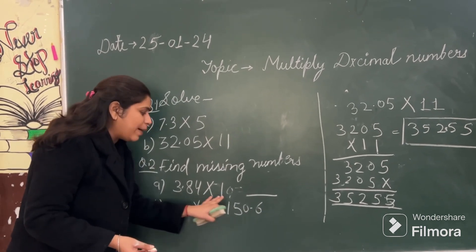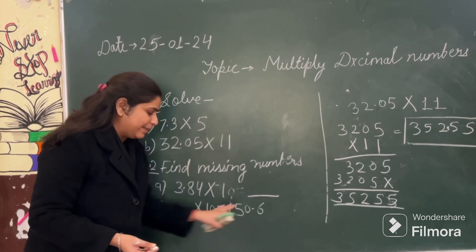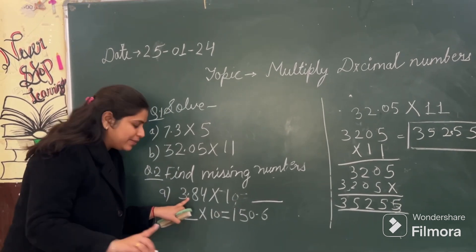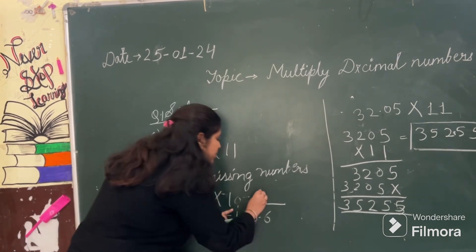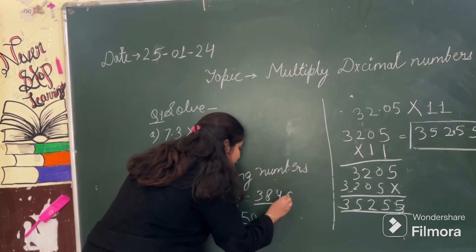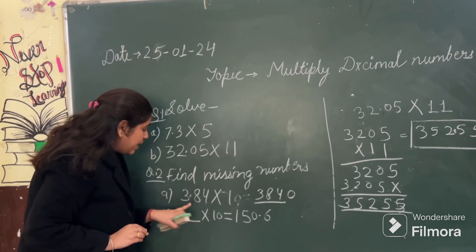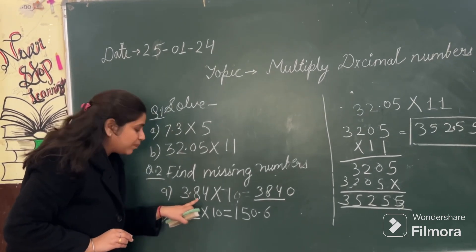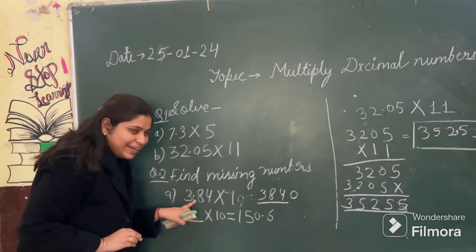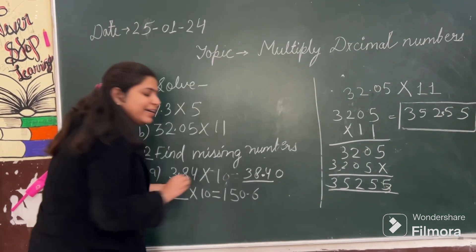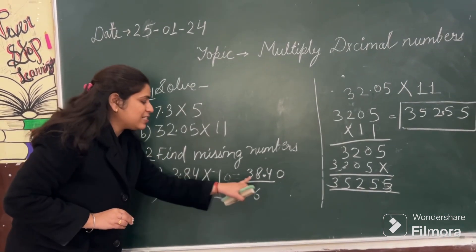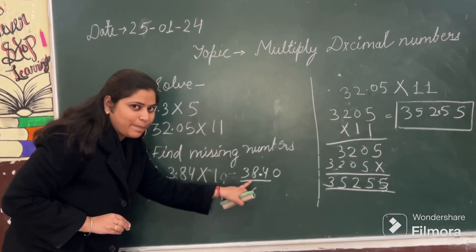If 3.84, you multiply by 10, then what? Ignore the decimal point. 384. 384 tens are obviously 3,840. Correct? Decimal point is where? Before the 2 digits. Correct? So in the final answer, before 2 digits, you will mark your decimal point. So in this way you got the missing number. Is it clear?